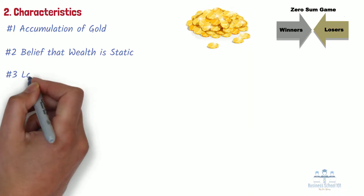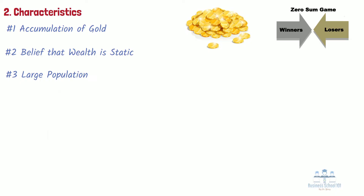Number 3: Large Population. According to mercantilist theory, a large population was necessary to supply labor, markets, and an army to the nation. The larger the nation, the more wealth it could accumulate and the bigger its army. So larger populations were associated with an increase in a nation's prosperity.